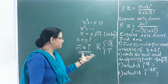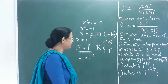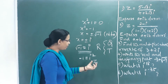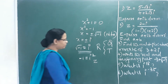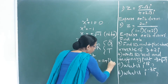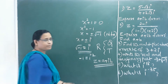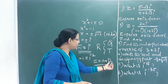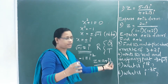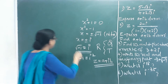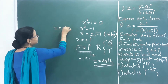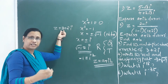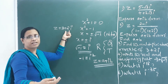This leads us to the concept of a complex number. We denote a complex number as z, and the standard form is z = a + ib. For example, z = 3 + 2i is a complex number with a real part and an imaginary part.